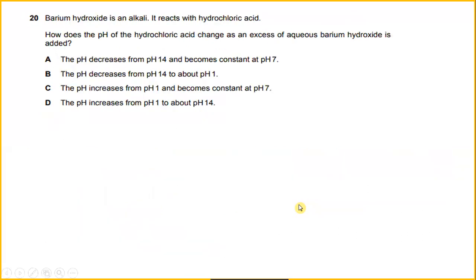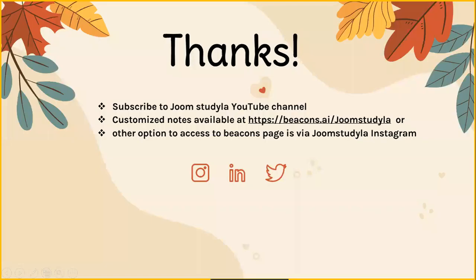And number 20, barium hydroxide is an alkali. It reacts with hydrochloric acid. How does the pH of the hydrochloric acid change as an excess of aqueous barium hydroxide is added? Because the pH increases from pH 1 to above pH 14. When excess of aqueous barium hydroxide is added to hydrochloric acid, the pH of hydrochloric acid will increase from 1 to above 14. So the answer will be D.